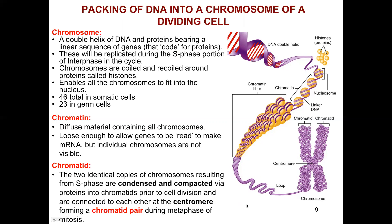Chromosomes are coiled and recoiled around proteins called histones. Your chromosome can be longer than you are tall, yet it has to fit into a structure smaller than the size of a cell — so these proteins are very important. For humans, you have 23 pairs of chromosomes in your somatic cells, and in your gametes — sperm and oocytes — you have 23 total chromosomes, not paired.